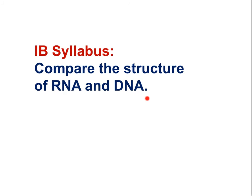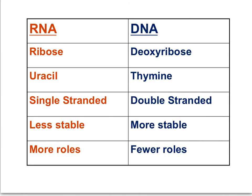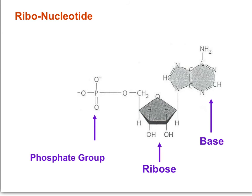The last IB syllabus statement for this movie is: compare the structure of RNA and DNA. RNA contains ribose sugar, while DNA contains deoxyribose sugar. RNA has the base uracil instead of thymine. RNA is single-stranded; DNA is double-stranded. RNA is less stable, while DNA is more stable and better able to store genetic information long-term. RNA has more roles, especially in protein synthesis, while DNA simply directs protein synthesis and stores genetic information as a sequence of bases.